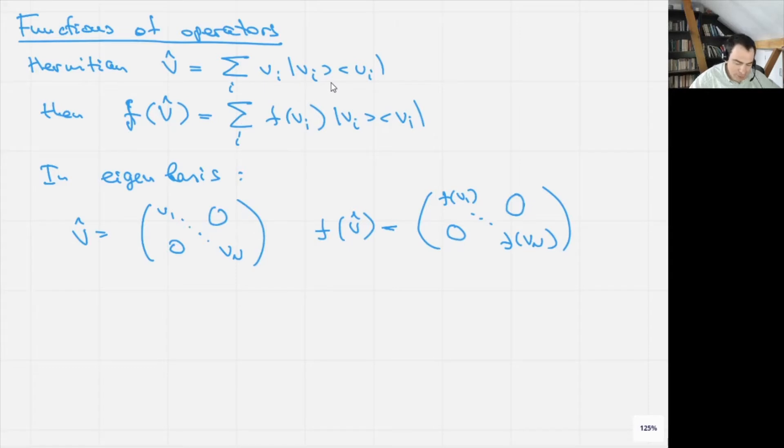As an example, let us consider operator V which is equal to the matrix with elements one, one, one, one - a permutation operator.